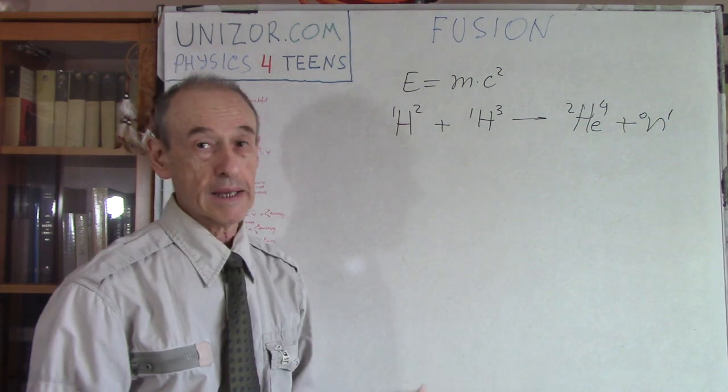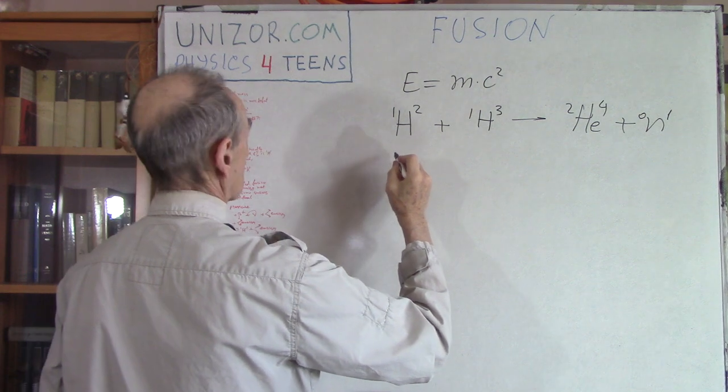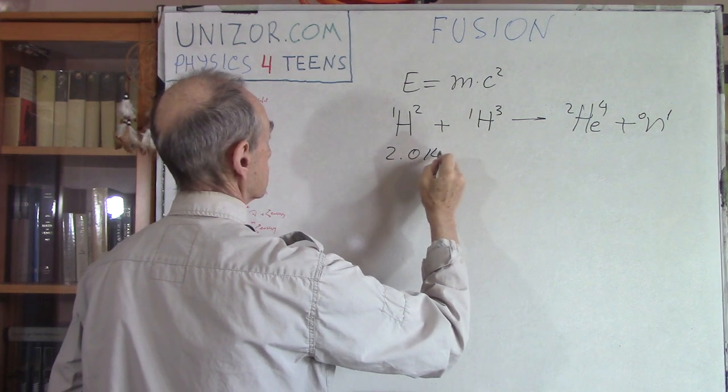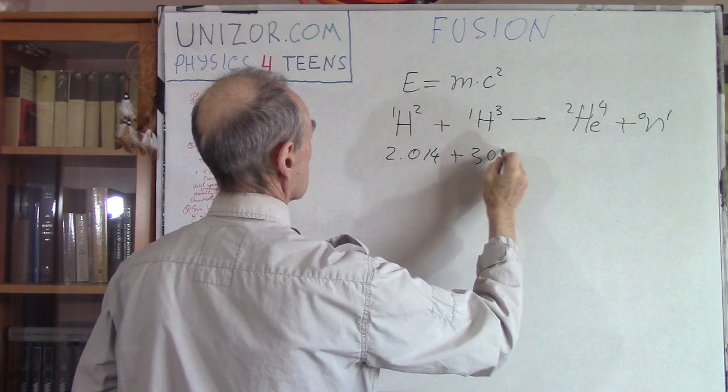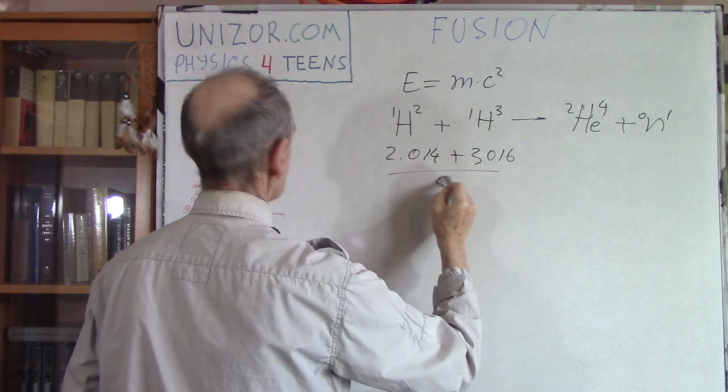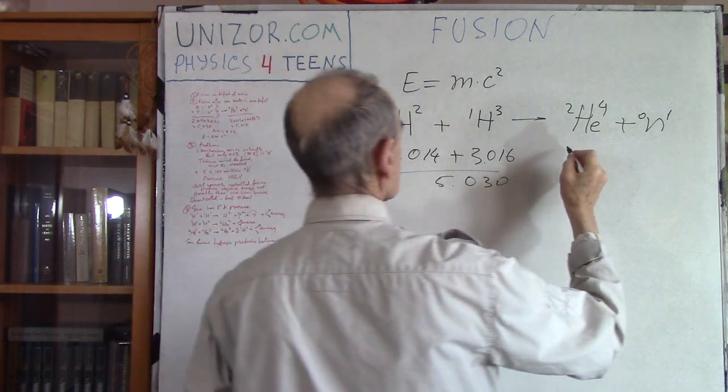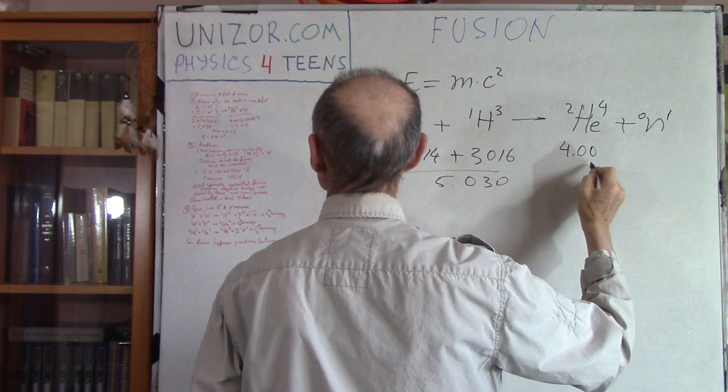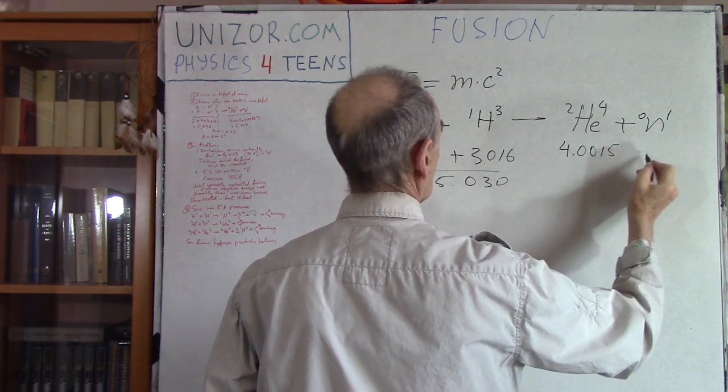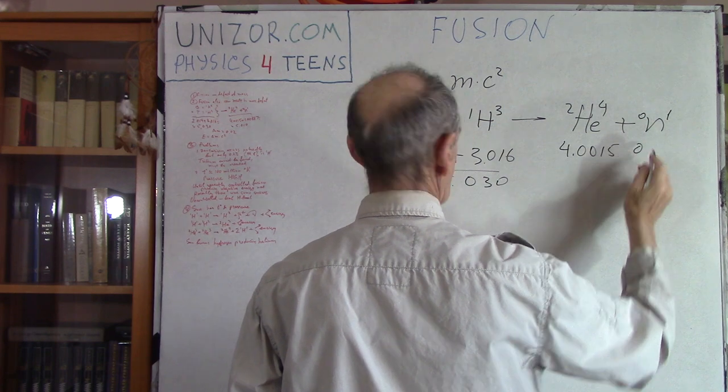Let's talk about mass. Deuterium is 2.014 atomic mass units, tritium is 3.016, which gives 5.030. Helium-4 is 4.0026, and neutron is 1.0087.